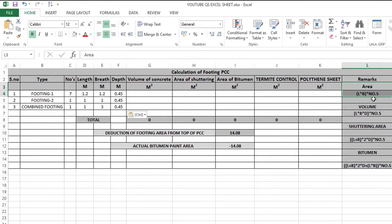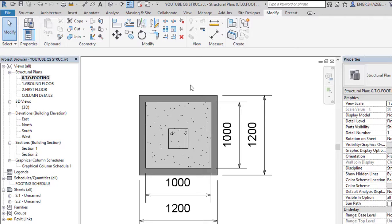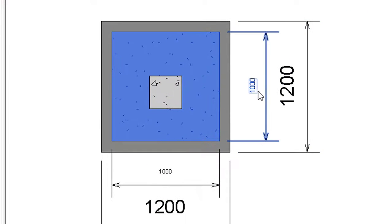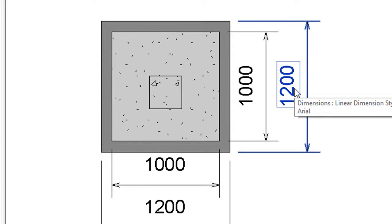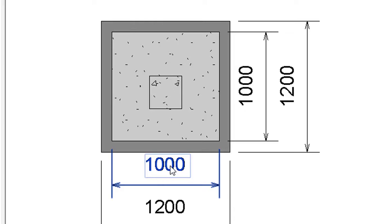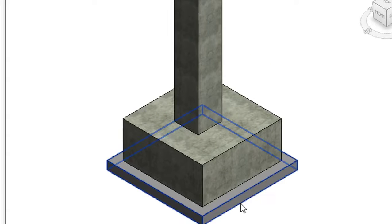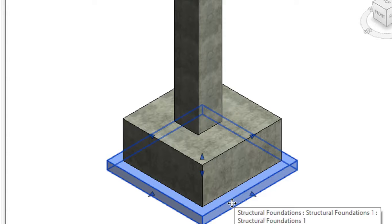So first we will start the footing PCC dimensions. PCC dimensions are extended all around. For example, footing dimension is 1000mm by 1000mm, so footing PCC length and width each extend by 100mm on all sides — so all around will increase 100mm. The depth is also 100mm. This is the PCC bed below the footing neck column, and the quantity will be calculated.